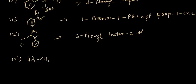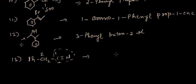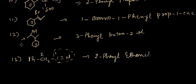For the last example in this lecture: we start numbering from the carbon of the functional group, which has the highest priority. The name is 2-phenyl ethane nitrile. This brings us to the end of this video lecture. In the next video lecture I will be discussing more examples of nomenclature of aromatic compounds. Good luck and goodbye.